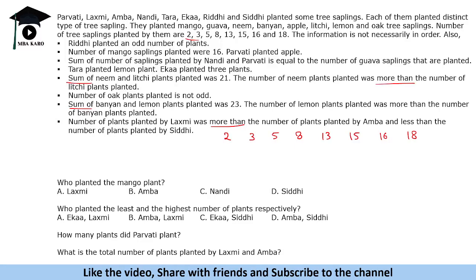Now let's look at information directly given in the statements. Hrithi planted an odd number of plants — we cannot tell yet because there are multiple odd numbers, so this is round 2 information. The number of mango saplings was 16, so we put mango there. Parvati planted apple — we'll come to that later. Eka planted 3 plants, so Eka is placed at 3.